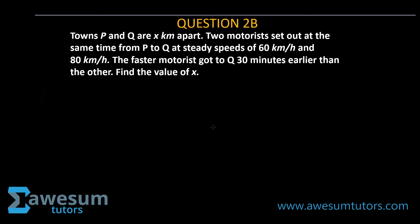Hi everyone, today we are going to be looking at the WASC 2010 general mathematics question. It says: towns P and Q are x kilometers apart. Two motorists set out at the same time from P to Q at steady speeds of 60 kilometers per hour and 80 kilometers per hour. The faster motorist got to Q 30 minutes earlier than the other. Find the value of x.